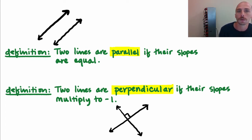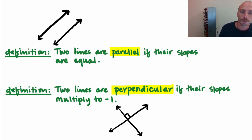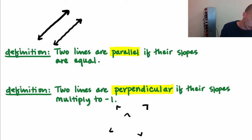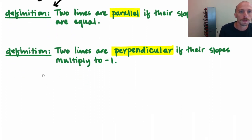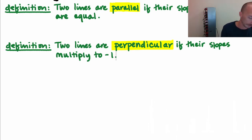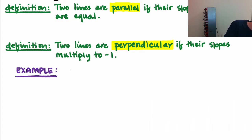Perpendicular lines intersect at a 90-degree angle. Let me do a quick example of two lines that are perpendicular. If we had y equals two-sevenths x plus one, and we wonder what the slope of the line perpendicular to it would be.